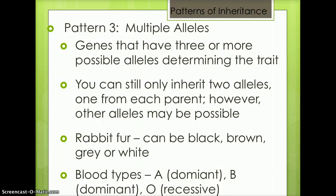Pattern 3 is multiple alleles. You can still only inherit two alleles, one from each parent; however, other alleles may be possible. One example of this is rabbit fur. The fur can be black, brown, gray, or white.